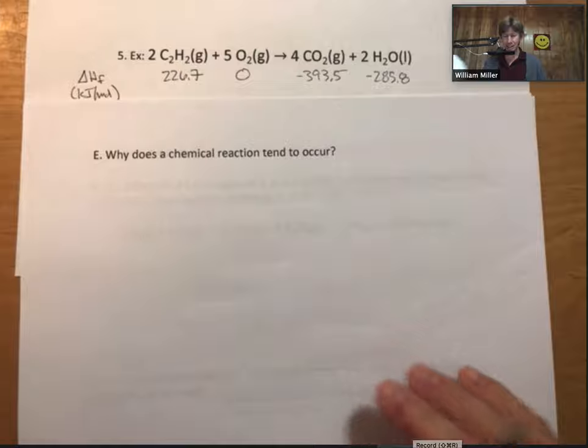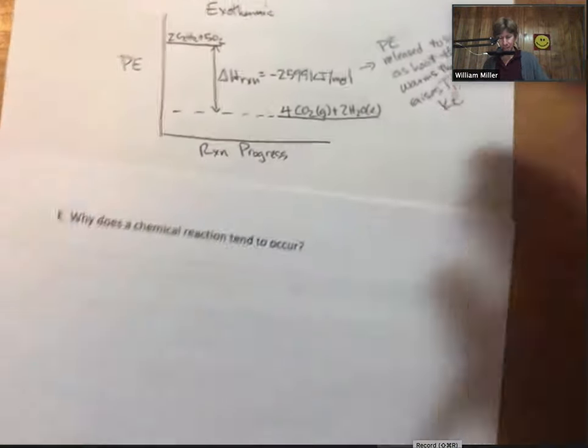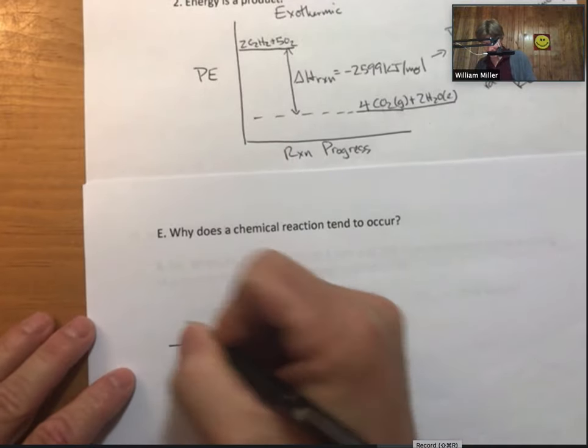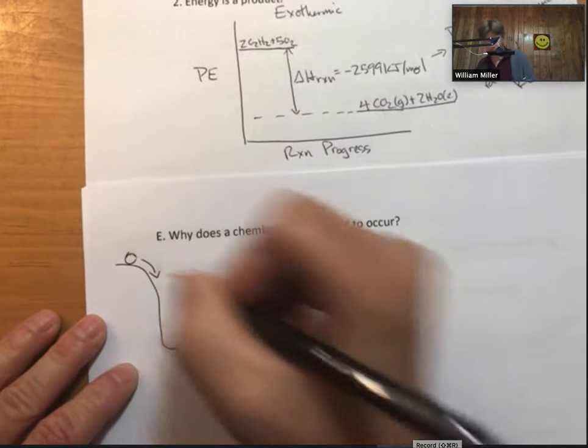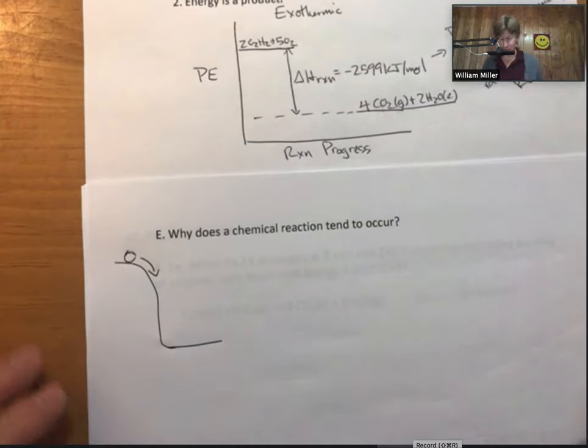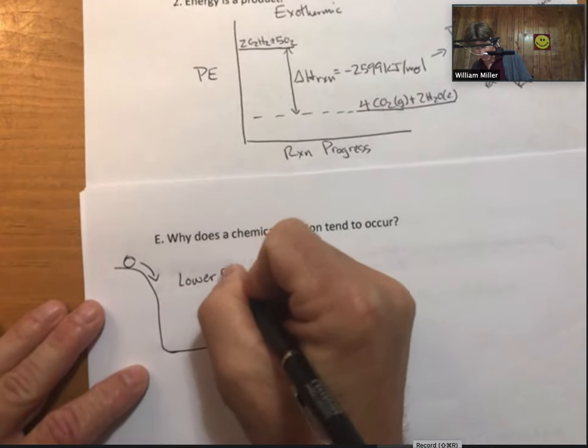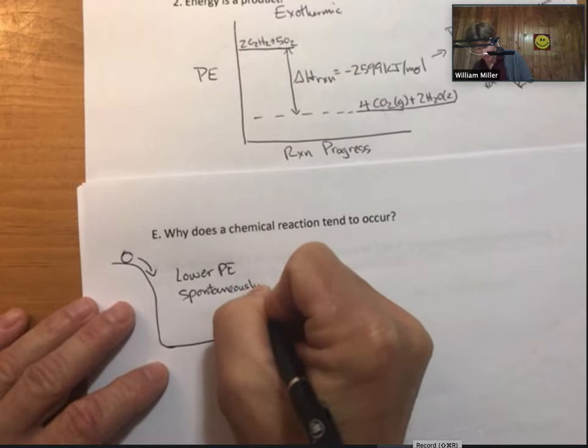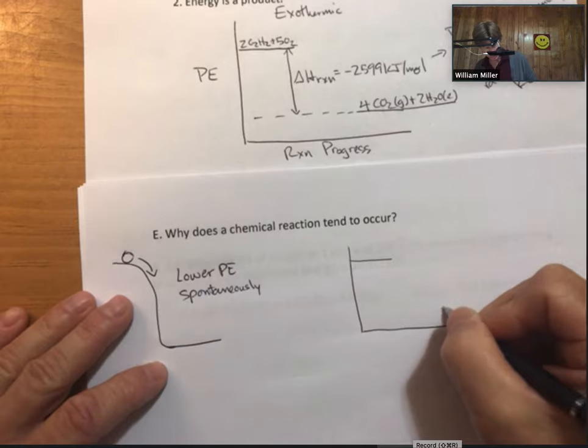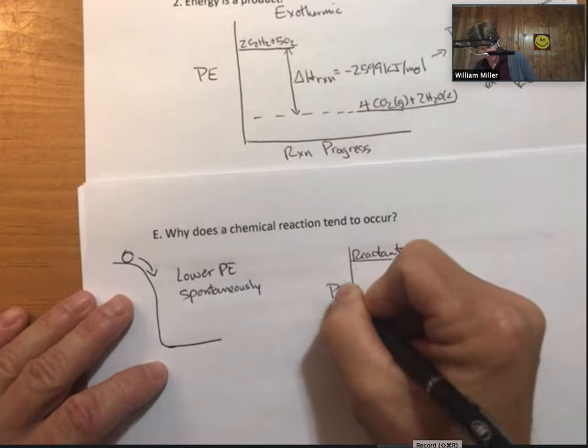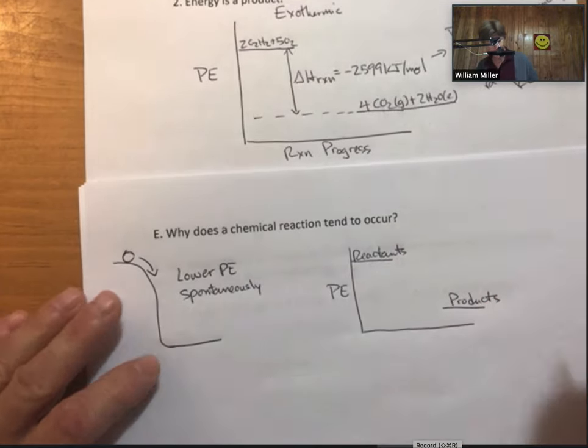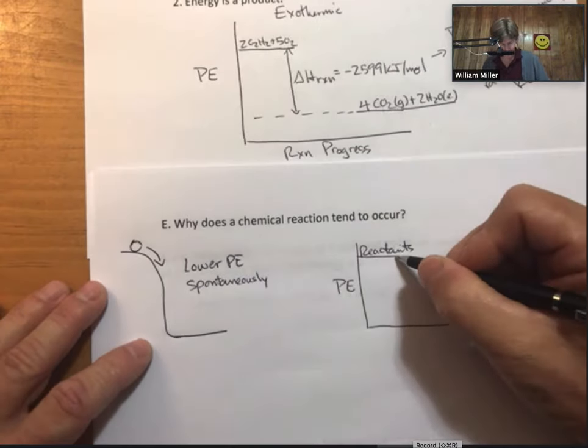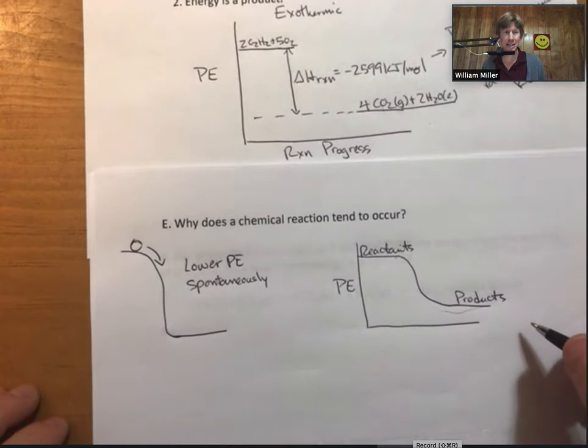Okay. So then we get to the question, why does a chemical reaction tend to occur? Piggybacking off of what we just said and relating it to physics in the same way that a ball will roll down a hill to lower its potential energy. Spontaneously.